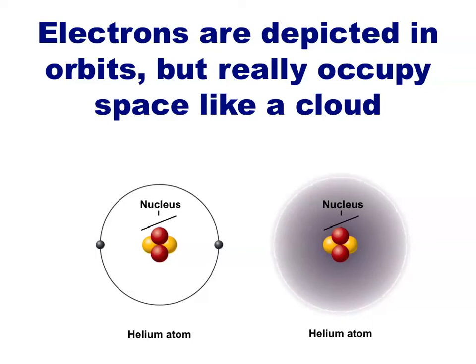Electrons surround the nucleus, forming a sort of cloud that shields the nucleus of an atom from the outside and from other atoms. When atoms interact, they do so through their electron clouds.